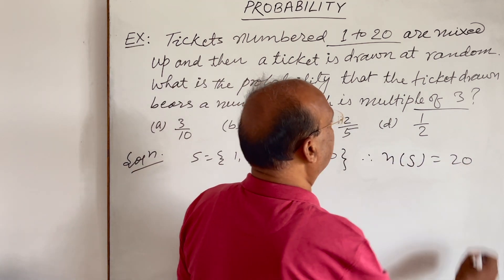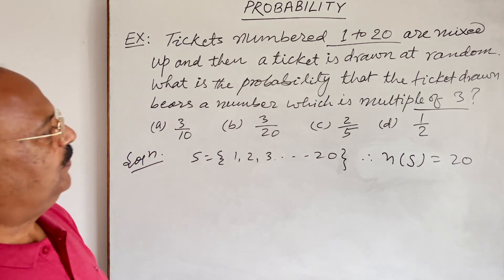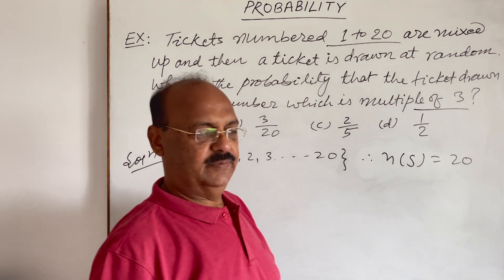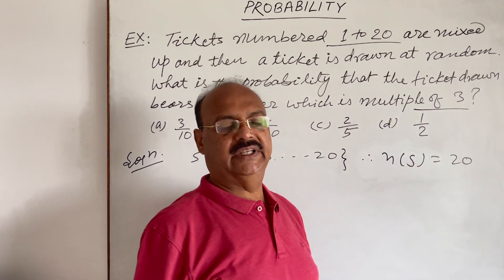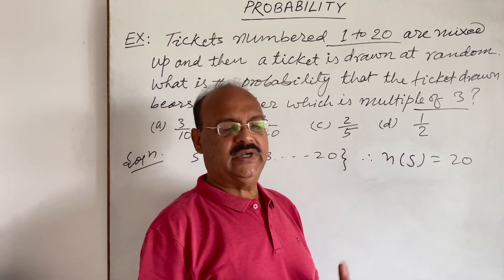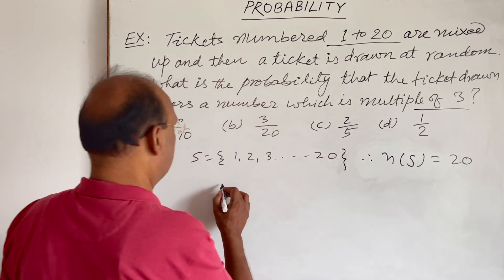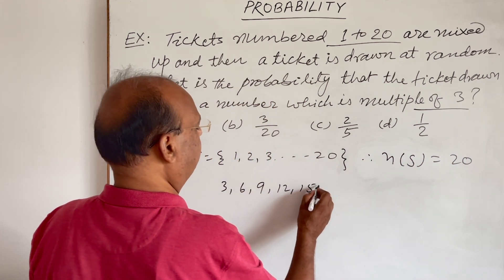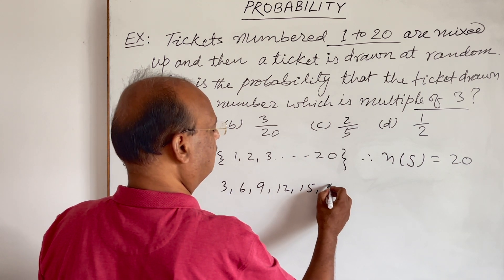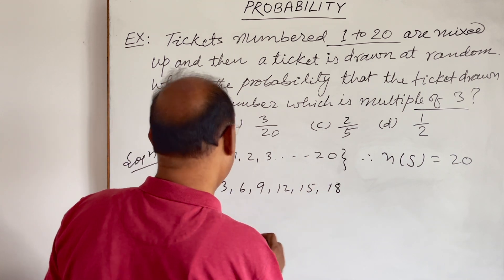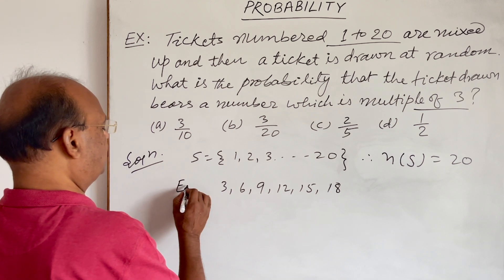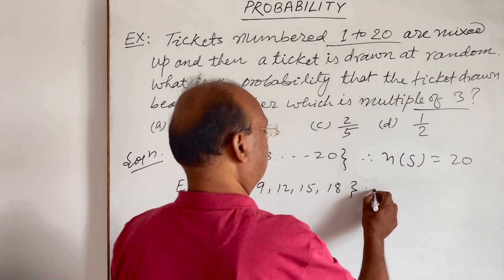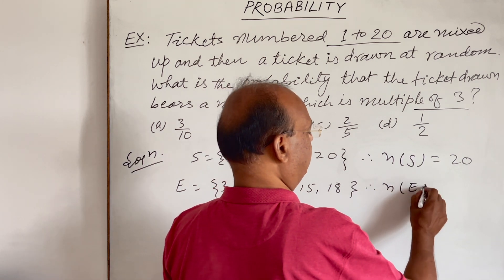We have to find out the probability that if one ticket has been drawn, it should be multiple of 3. So what are the different numbers here multiple of 3? These are 3, 6, 9, 12, 15, and 18. This collection is known as event, so therefore number of elements in this event is 6.